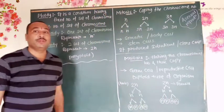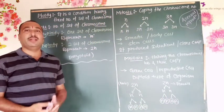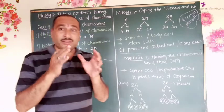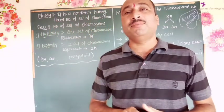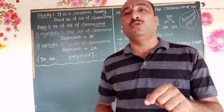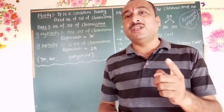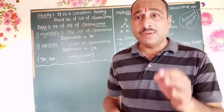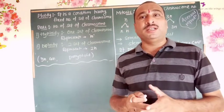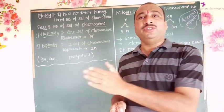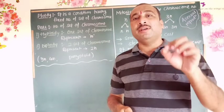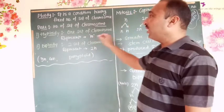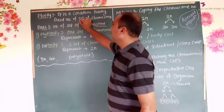If you know that chromosomes are in the nucleus, then we will study the structure. Every living thing — every cell has a nucleus, and that nucleus contains a fixed number of sets of chromosomes. Chromosomes exist in sets. So, the condition of having a fixed number of chromosomes is called ploidy.